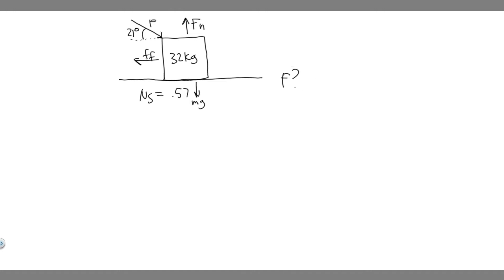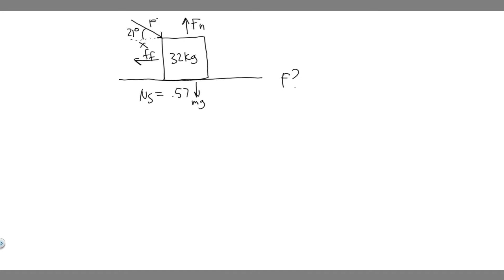The way we're going to solve for F is by first understanding how this works. We're trying to find the minimum value of F so that we're able to push the object. What forces are opposing the way we're trying to move it? There's only going to be one force acting in the opposite direction, which is the force of friction. So if our force wants to overcome this, the x-component of F has to be greater than the force of friction. Mathematically, the sum of the forces in the x-direction is going to be equal to 0.